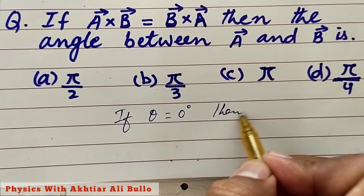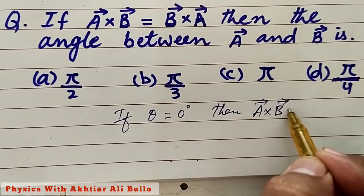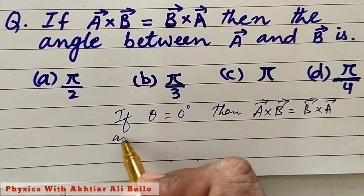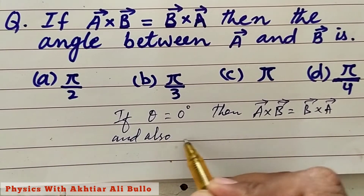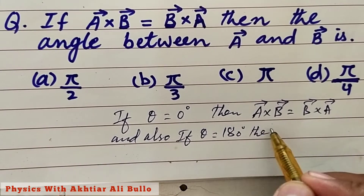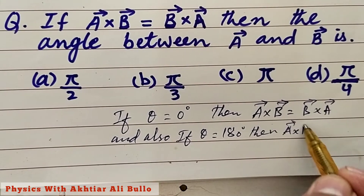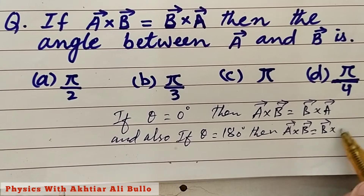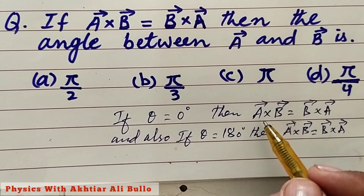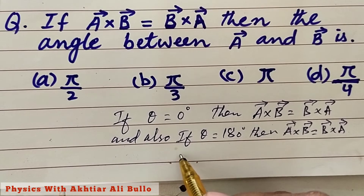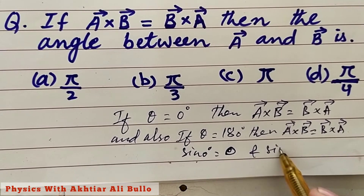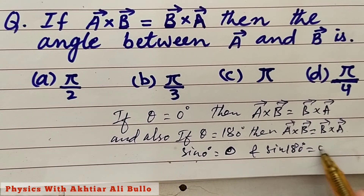If theta is 0, then A cross B is equal to B cross A. And also, if theta is 180 degrees, then A cross B is also equal to B cross A, because A cross B equals AB sine theta times its unit vector. So the value of sine 0 is 0, and the value of sine 180 degrees is also 0.